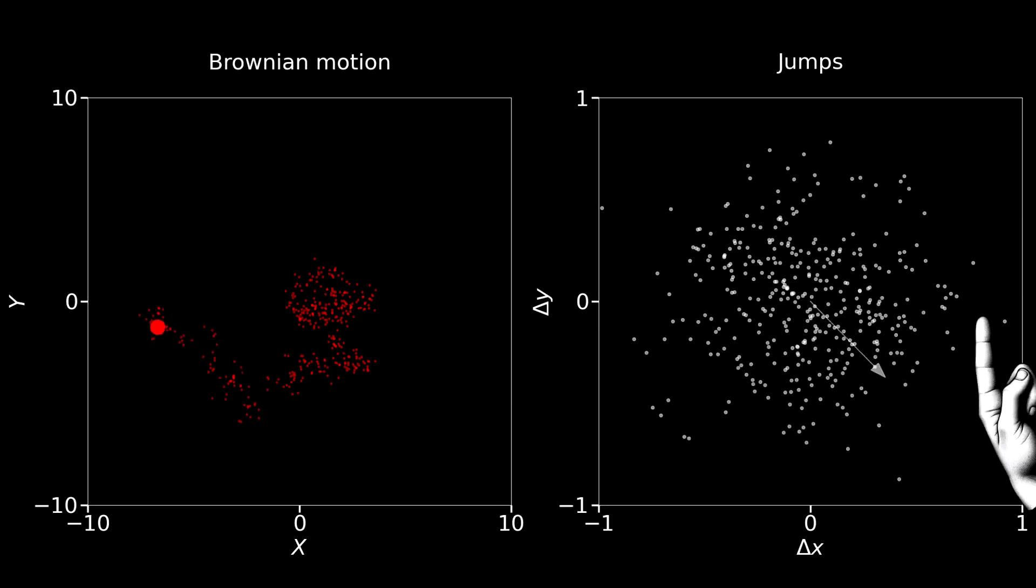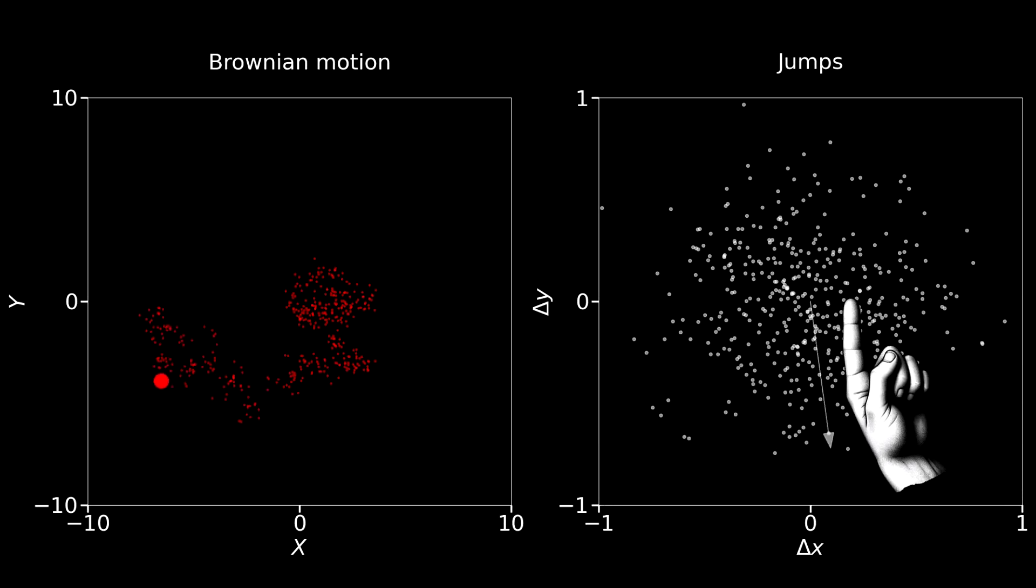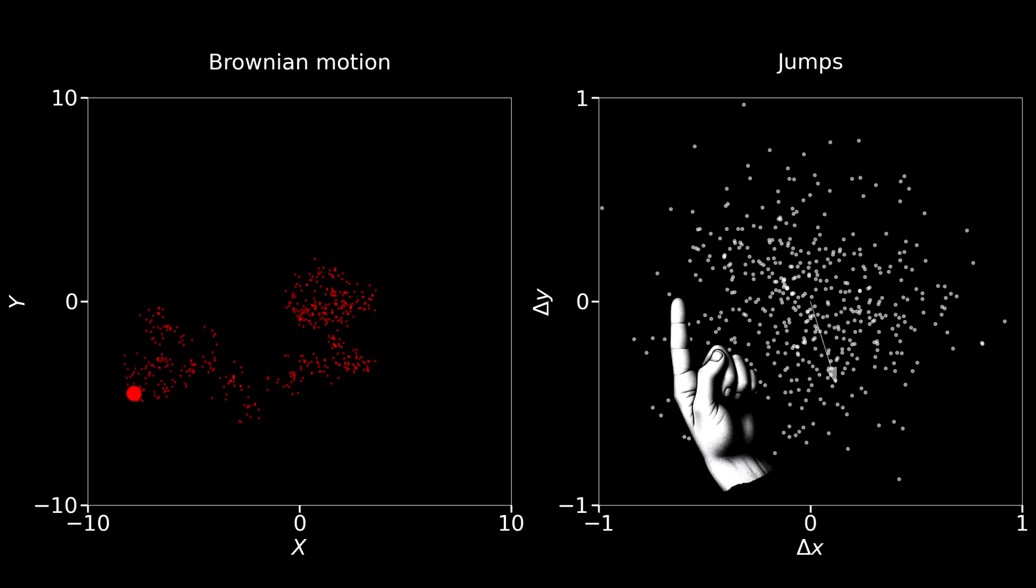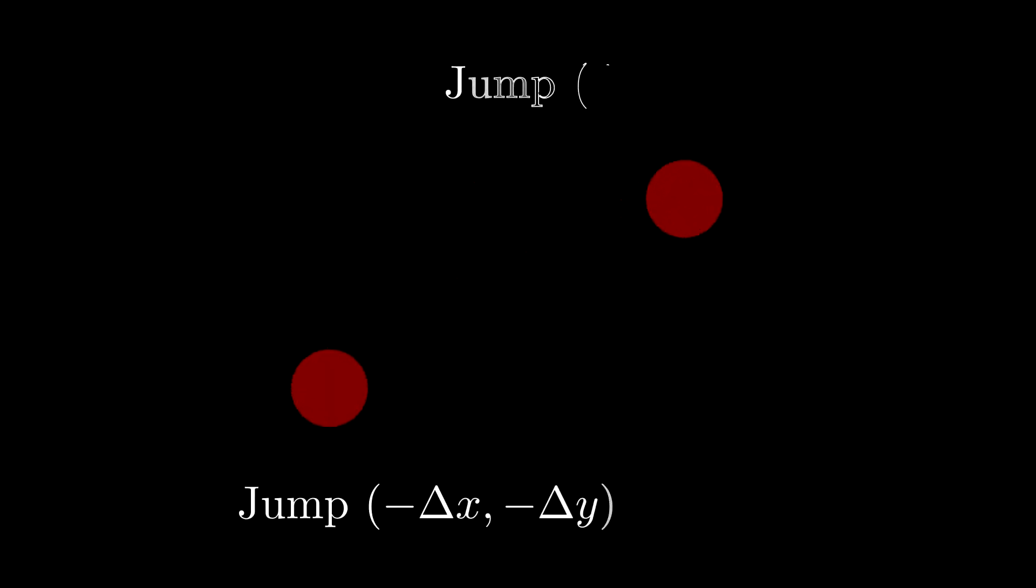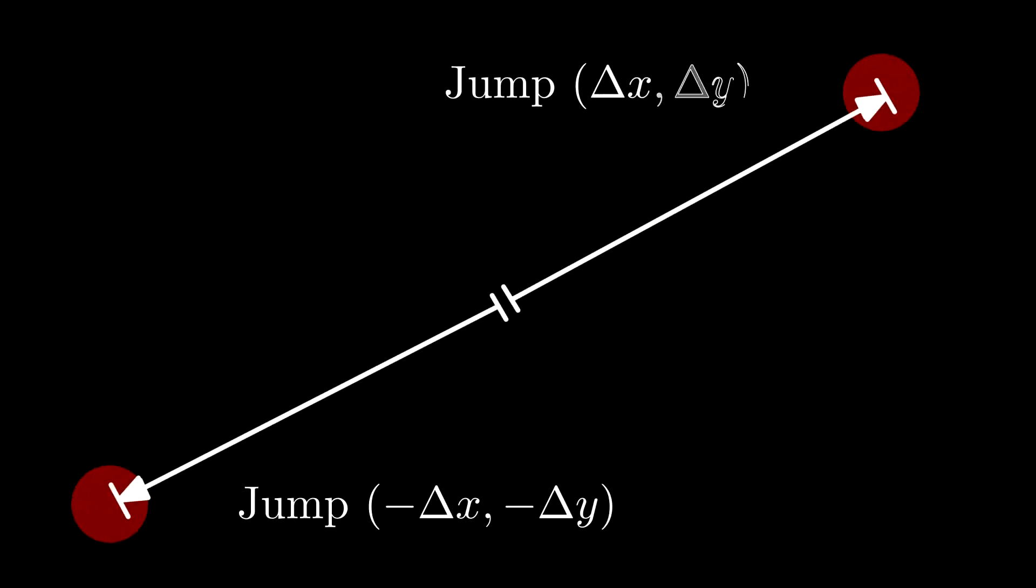This mathematical statement just means that there are as many jumps in one direction as in the opposite. Thus, the expected value of the jump in each direction must be 0, as it is equally likely to jump in the direction delta x delta y as it is to jump in the opposite one.